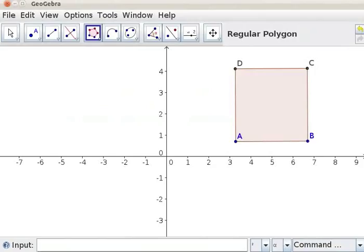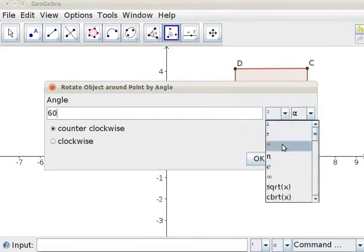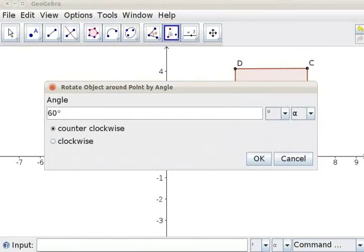Click on Rotate Object Around a Point by Angle tool. Click on the square ABCD. This will highlight the square. Next, click on any one of the vertices. I will click on A. A dialog box opens. Type 60 in the angle field. Select Degree from first drop-down list. Select Option Clockwise and click on OK.